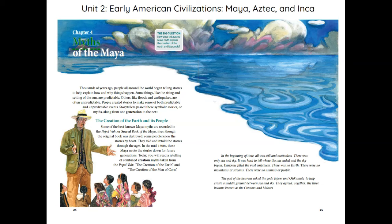Chapter 4: Myths of the Maya. The big question: How does this sacred Maya myth explain the creation of the Earth and its people? Thousands of years ago, people all around the world began telling stories to help explain how and why things happen. Some things, like the rising and setting of the sun, are predictable. Others, like floods and earthquakes, are often unpredictable. People created stories to make sense of both predictable and unpredictable events. Storytellers passed these symbolic stories, or myths, along from one generation to the next.